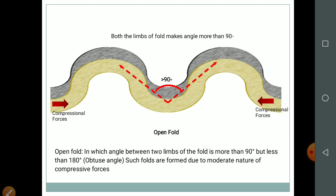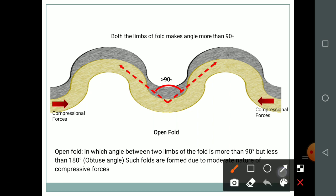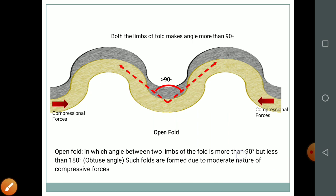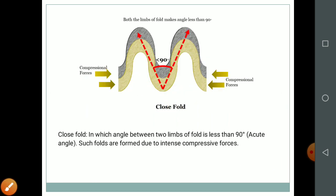There are certain types of folds based on the angle of inclination. If the angle between two limbs is more than 90 degrees, it is called an open fold. If the angle between two limbs is less than 90 degrees due to high compressional forces, it is called a closed fold. These are the two basic types of folds — open fold and closed fold.